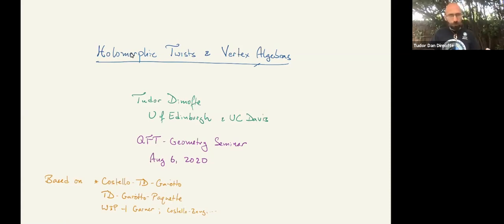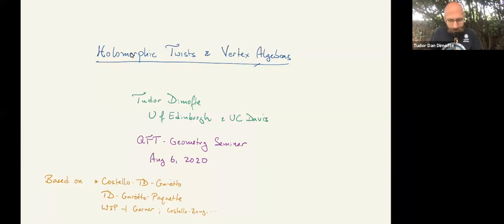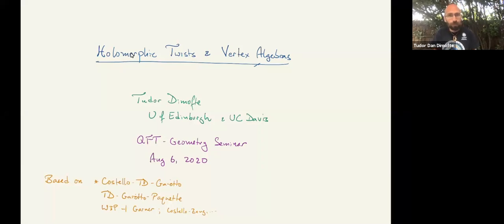One of our big motivations in studying the subject was to promote a bunch of half-index dualities that I worked on with Davide and Natalie Paquette a few years ago — to promote these half-index dualities to dualities of vertex algebras, where the half indices are actually computing the characters of the various vertex algebras. There are ongoing directions involving line operators that my student Nick Garner has been working on, and Kevin and his student KU Zhang have been working on bulk vertex algebras and gauge theories. The story is far from finished.